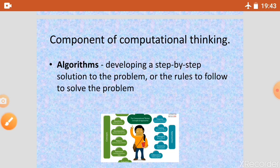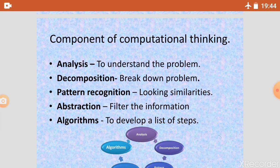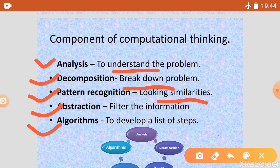Let us recall the components of computational thinking. There are five: Analyze, Decomposition, Pattern Recognition, Abstraction, and Algorithm. Analyze means understand the problem. Decomposition means break down the problem into small parts. Pattern Recognition means understand the similarity trends of a problem. Abstraction means filter the information. And Algorithm means develop a list of steps to solve the problem. Okay class, goodbye.